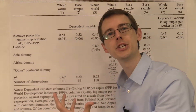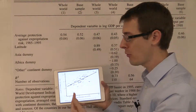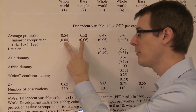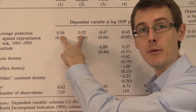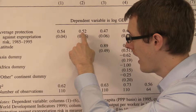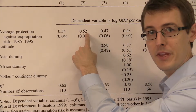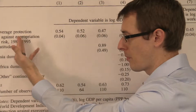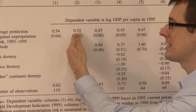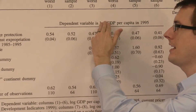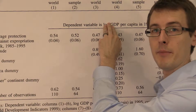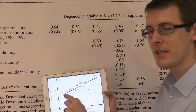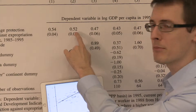What's the relationship between them? In the picture we see a positive relationship, and in the table we see positive numbers: 0.52. That says that in the data, property rights tend to be positively related to economic development. This number is just the slope of the line in the picture — that's all this number is.